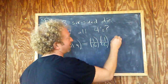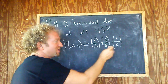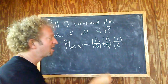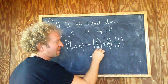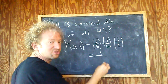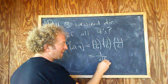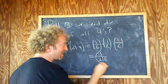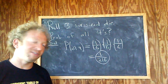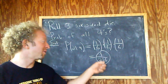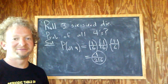The third die also lands on four, so it's 1/6 times 1/6 times 1/6. One times one times one is 1, and 6 times 6 times 6 is 216. So if you roll three six-sided dice, the probability that they all land on 4 is 1 over 216. I hope that made sense.